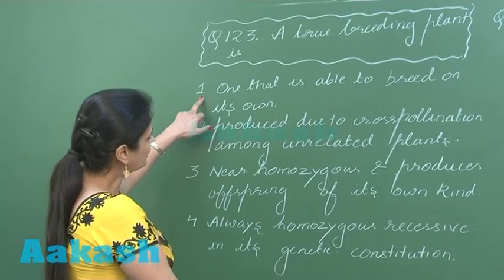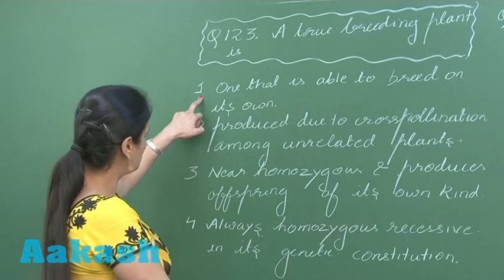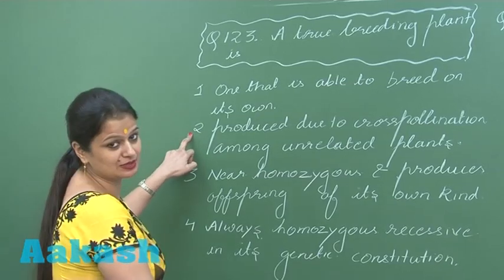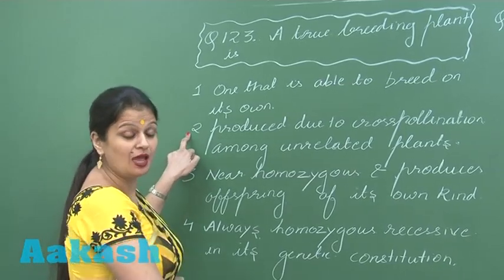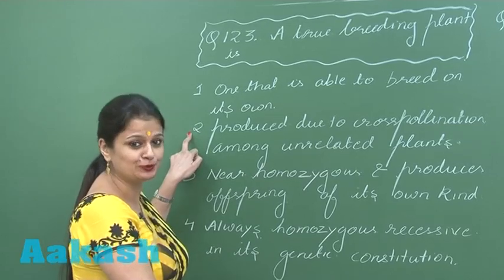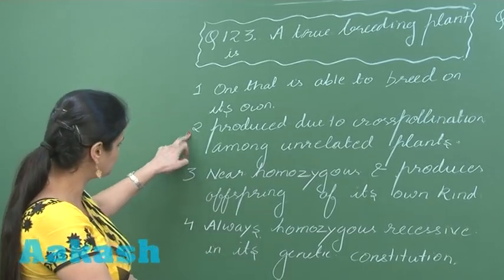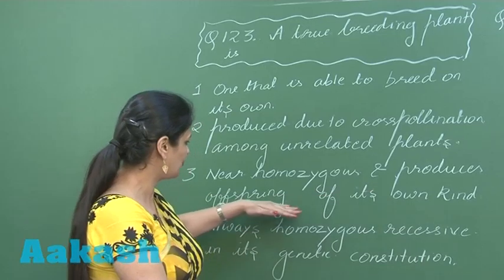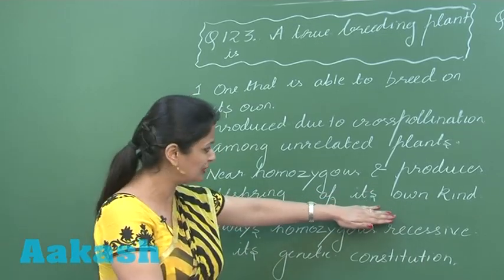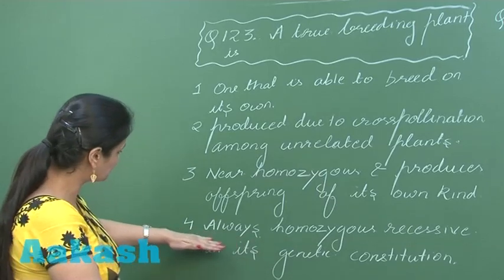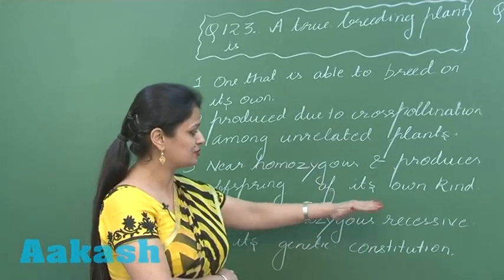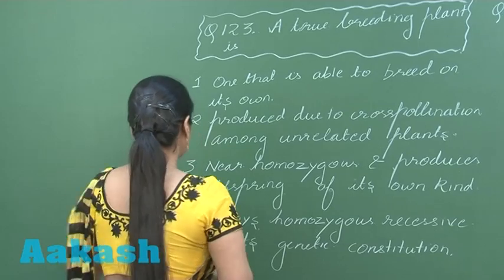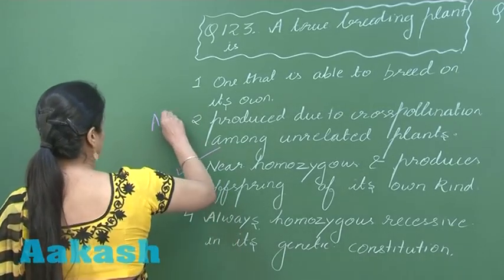Looking at the options: Option 1 — one that is able to breed on its own — is wrong. Option 2 — produced due to cross pollination among unrelated plants — is wrong, because after self pollination it should produce the same trait generation after generation. Option 3 — near homozygous and produces offspring of its own kind — seems correct. Option 4 — always homozygous recessive — is wrong because it can be recessive as well as dominant. So the right option is option number 3.